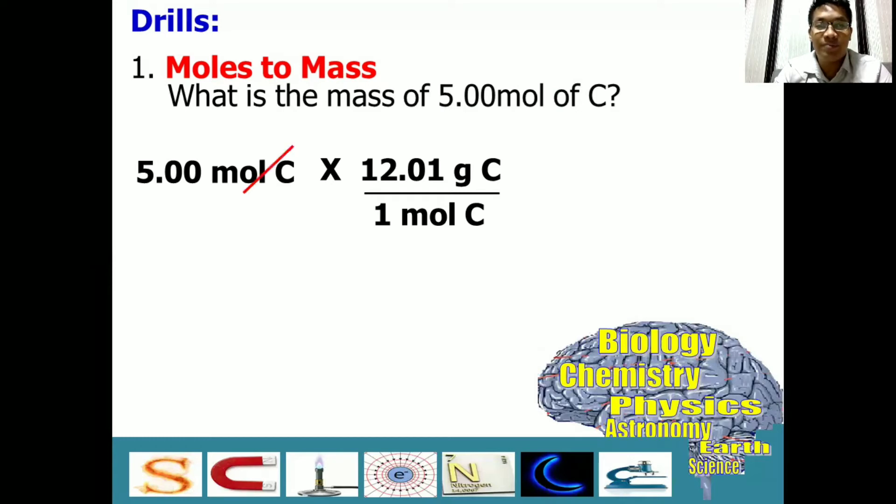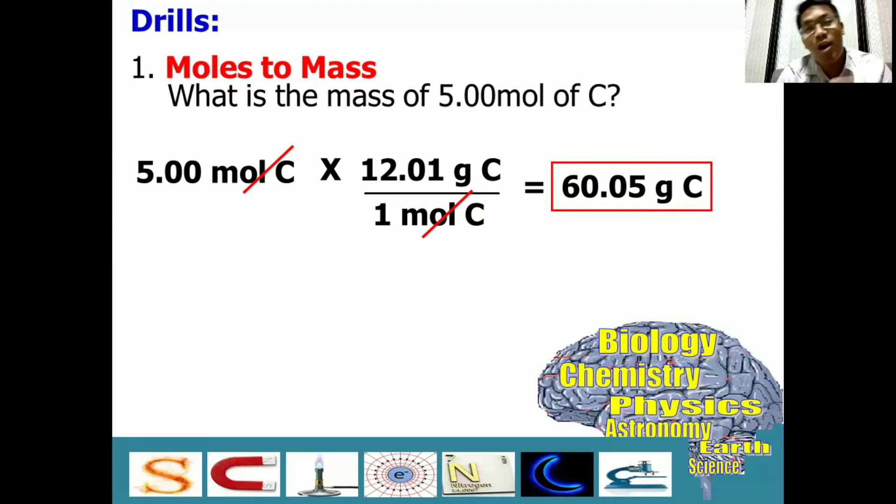With this, we can cancel them out. And so, 5 times 12.01 is equal to, you got it right, 60.05 grams carbon. And this will be our answer. Meaning, 5 moles of carbon is equal to 60.05 grams of carbon.